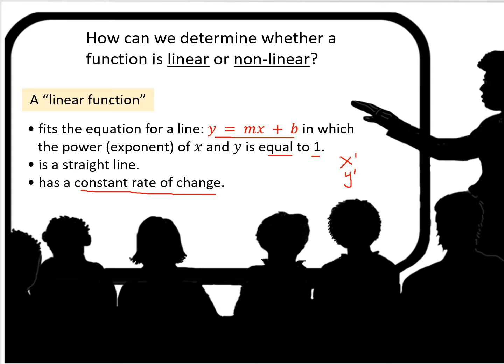And the straight line has a constant rate of change. What does that look like on a graph? Well, it's going to be the slope. So the slope between any two points on that line needs to be the same.